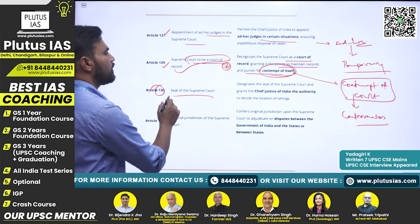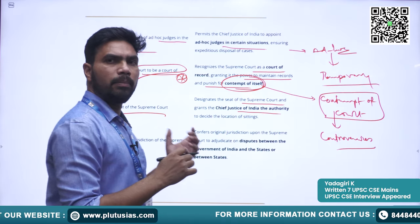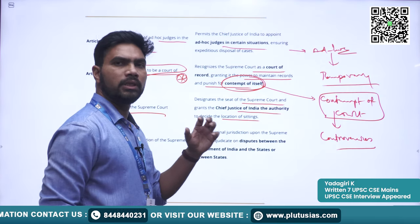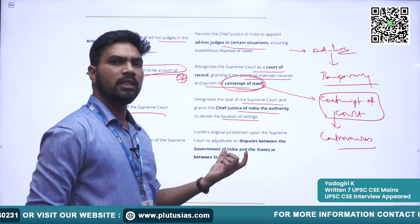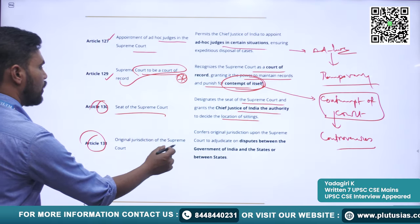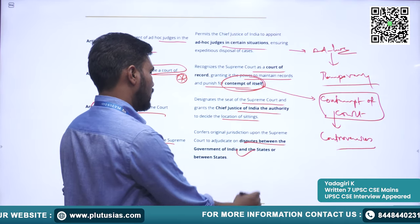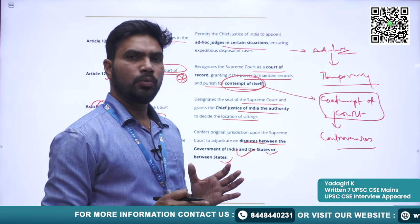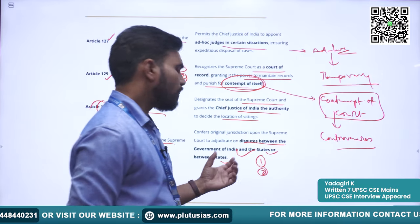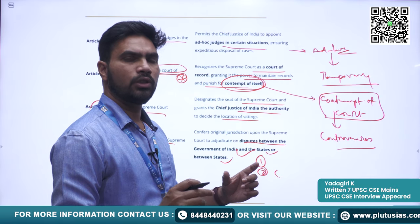Article 130 concerns the seat of the Supreme Court. It designates the seat as Delhi, and grants the Chief Justice the power to designate any other place as the seat of the Supreme Court. Article 131 covers the original jurisdiction of the Supreme Court — settling disputes between the Government of India and states, or between the states. Whenever there is a dispute between the central government and a particular state, or interstate conflicts, it comes under the original jurisdiction of the Supreme Court.